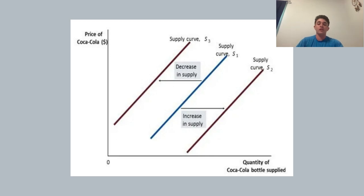However, there's also things like improvements of technology and techniques of production used by Coca-Cola that would lead to decreases in the cost of production. And then the supplier would be more willing to supply more product and there would be a rightward shift in the supply curve going from S1 to S2.